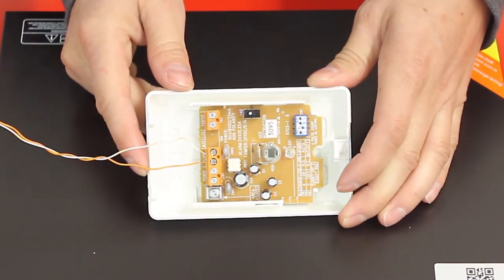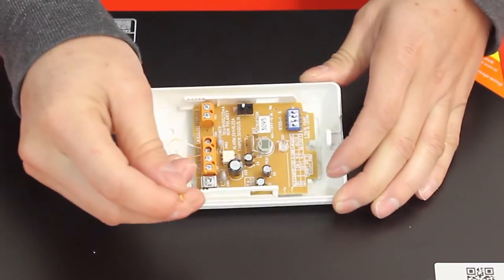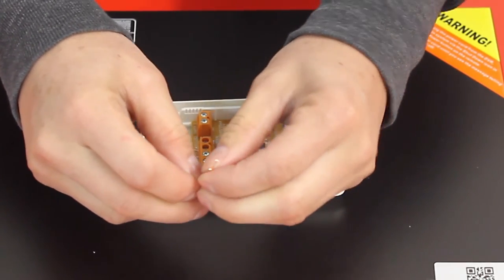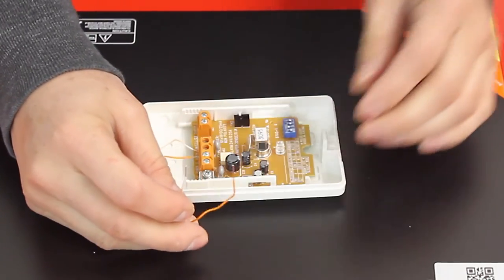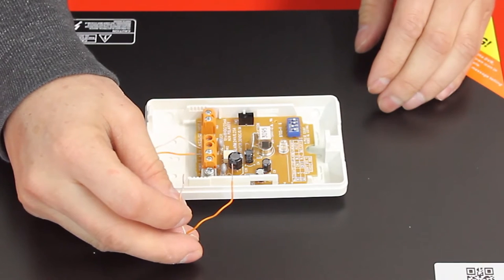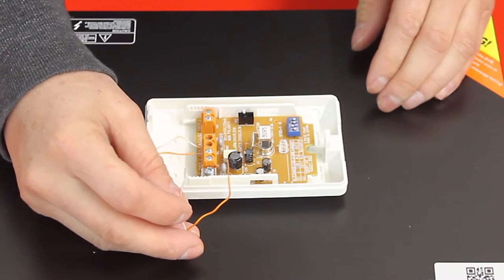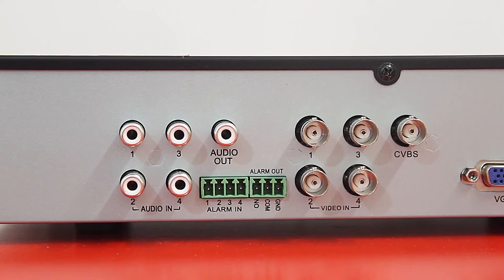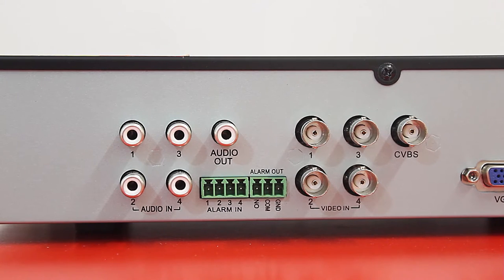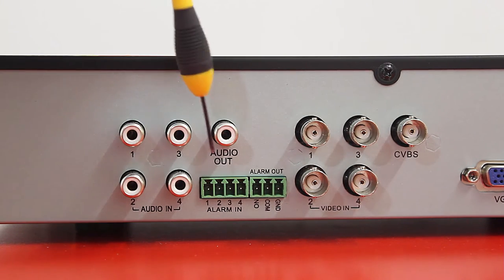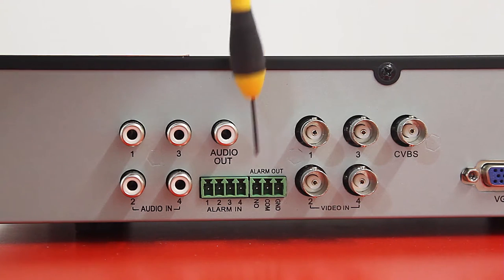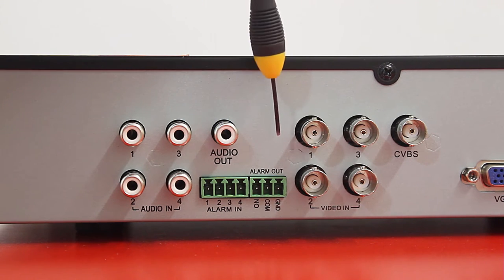Once I have my two cables connected, the other two cables I am going to connect to the back of the DVR or NVR under the alarm inputs. Let's go ahead and do that. Now on the back of my DVR or NVR I am going to look for the alarm inputs. For example I got four alarm inputs one through four. And I also have an alarm output.